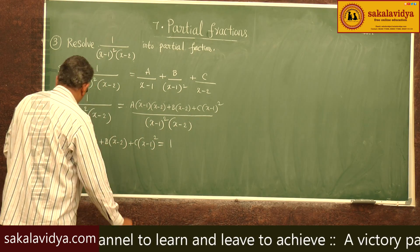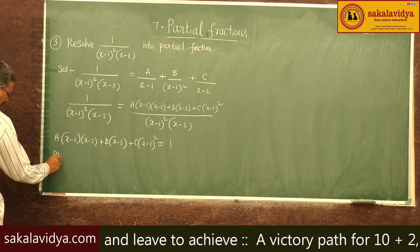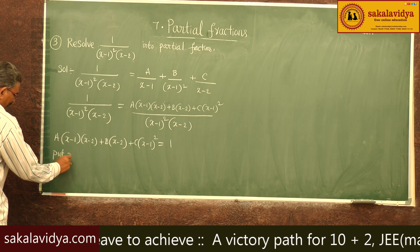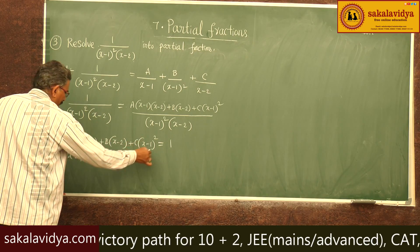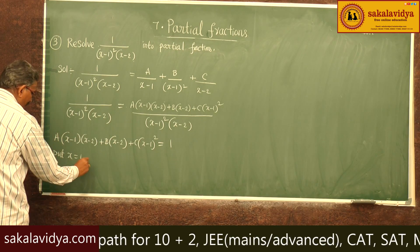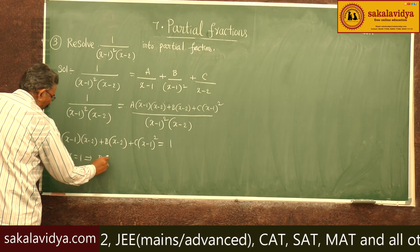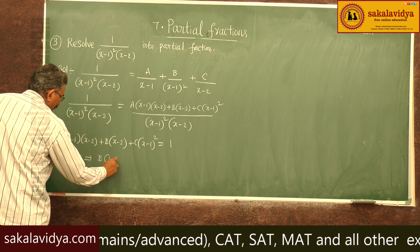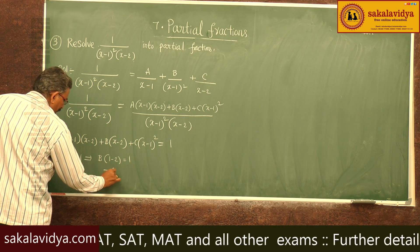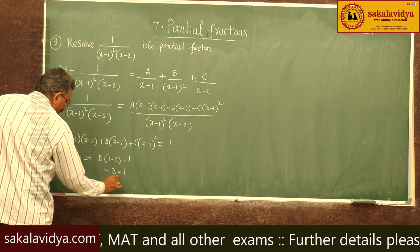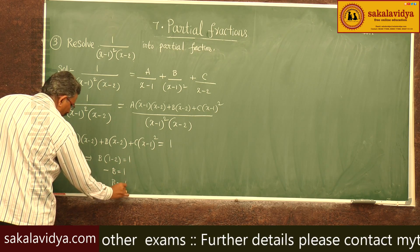Put x equal to 1. The A term becomes 0 and the C term becomes 0. So B times (1 minus 2) equals 1, giving minus B equals 1, so B equals minus 1.